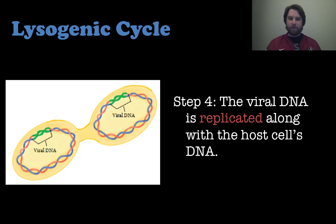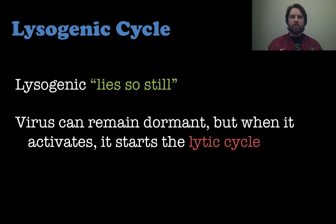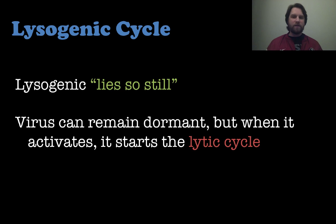That viral DNA is replicated along with the host cell DNA, and before you know it, you've got cell division taking place — lots and lots of copies of this cell with that inactive viral DNA still in there. That lysogenic cycle stays dormant. A way you can remember it is: lysogenic lies so still. Usually when you're infected with a virus and it's in its lysogenic cycle, you're not really going to see any symptoms because it's remaining inactive. But something can happen at any time to activate that DNA — that prophage — and once it gets activated, it enters the lytic cycle, which is the infective cycle.